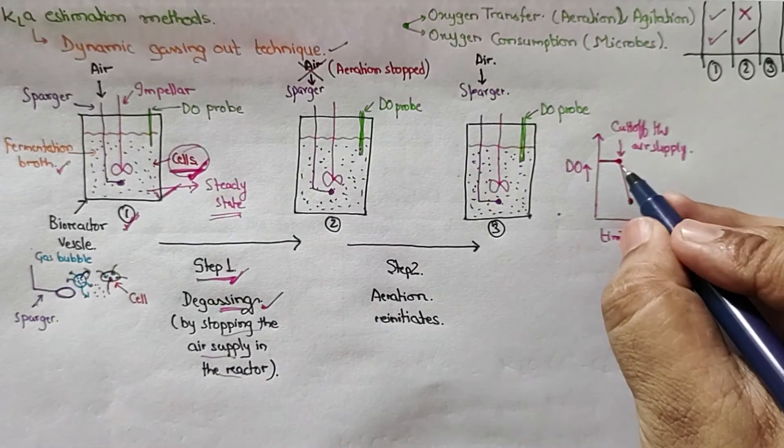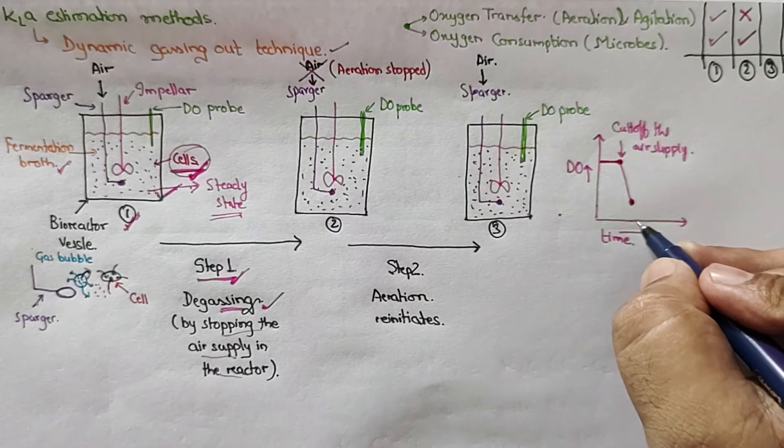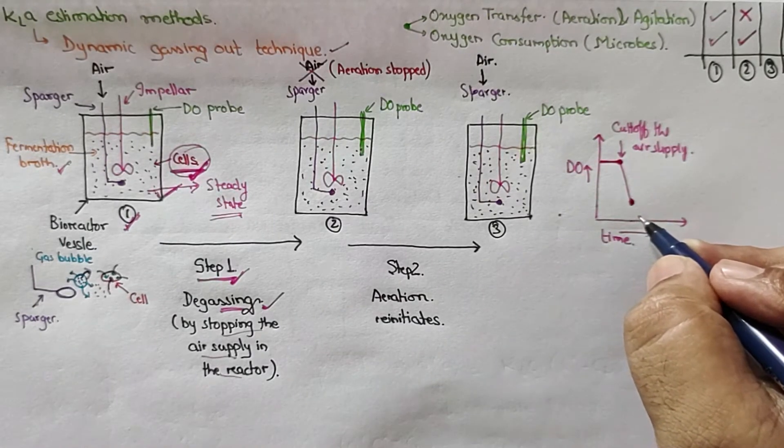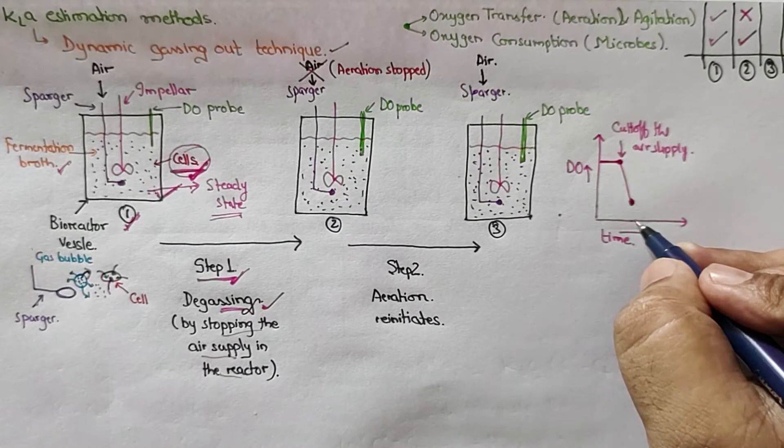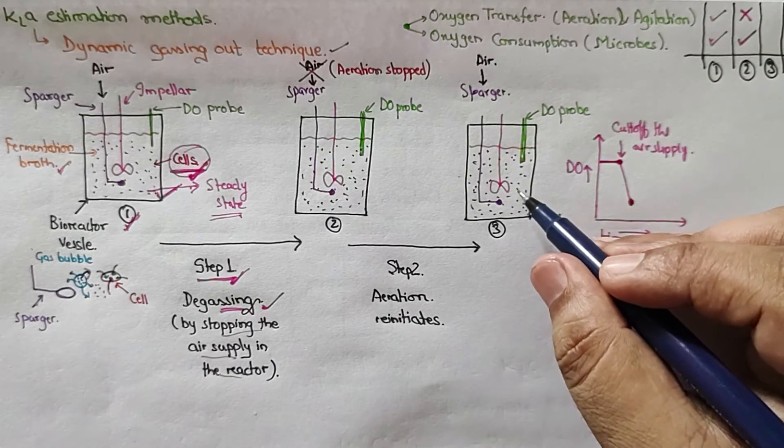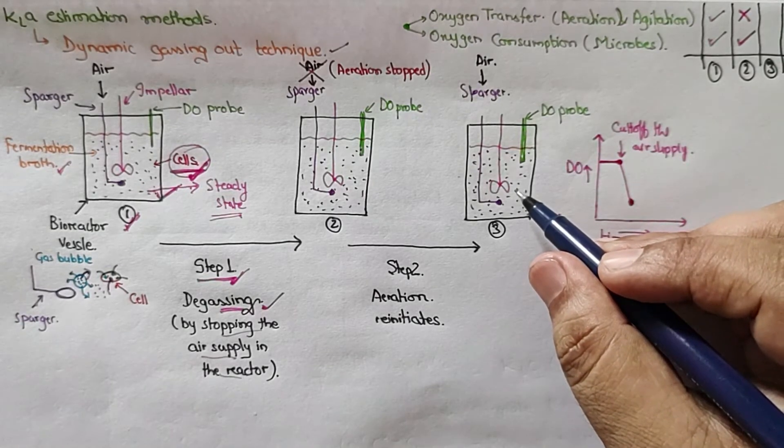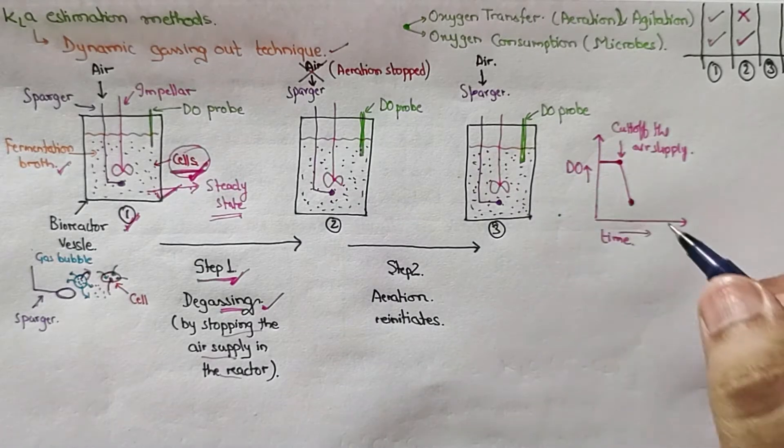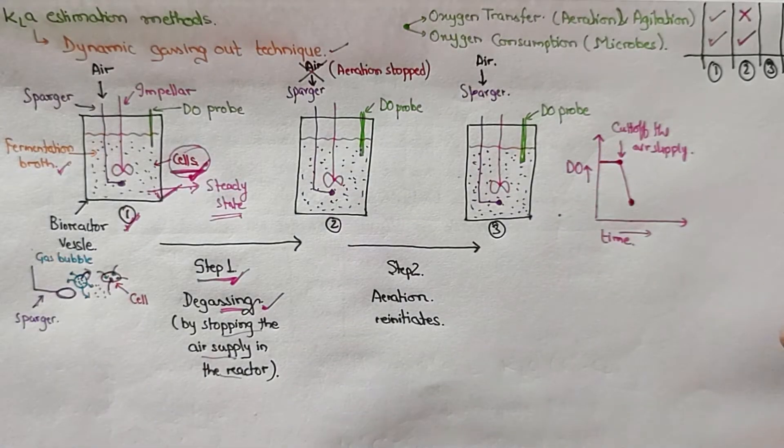But the DO level should never reach zero as in the case of static method. Why? If it reaches zero the cells won't have enough oxygen for their survival and most of the cells will die. And at the end our experiment will be a complete failure.